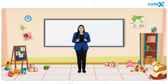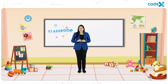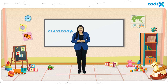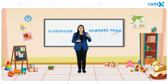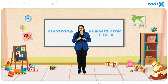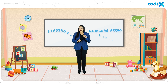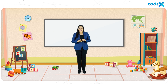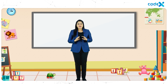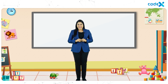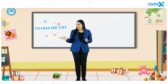So in today's session, we will be adding the classroom background for our game and adding the numbers from 1 to 10 to the background. And there is one person eagerly waiting for you in the classroom. Want to know who it is? For that we have to begin today's session and add her to the background from the character list. So let's begin.